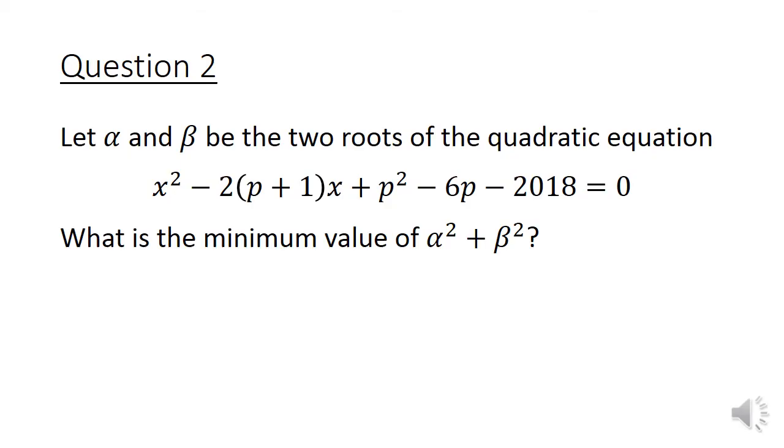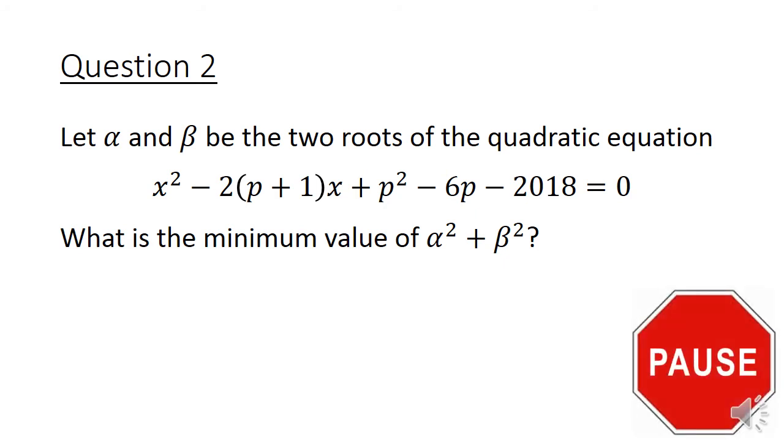Let's have a look at question 2. Let alpha and beta be the two roots of the quadratic equation x square minus 2 times bracket p plus 1 close bracket x plus p square minus 6p minus 2018 equals to 0. What is the minimum value of alpha square plus beta square? Pause the video here to give this question a good try.